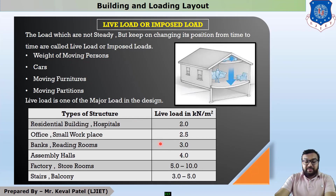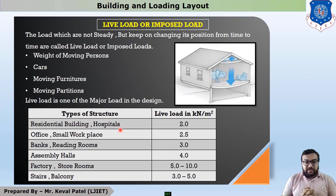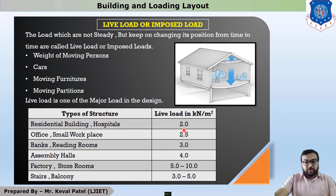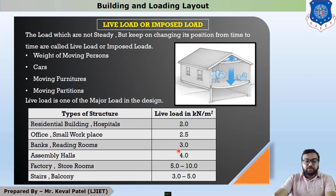When there is no clarification about the live load value in your exam, you have to assume: residential or hospital building — 2 kN per meter square; office — 2.5 kN/m²; bank or reading room — 3 kN/m²; assembly hall — 4 kN/m²; factory and store room — 5 to 10 kN/m²; and stair and balcony — 3 to 5 kN/m².